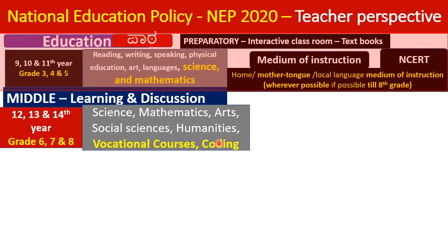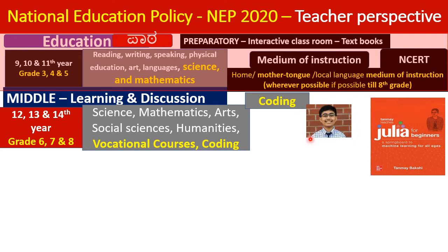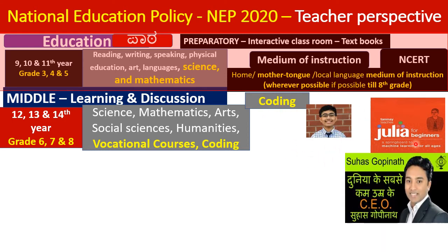Coding is particularly important given developments in artificial intelligence and machine learning. There are inspiring examples: one individual was teaching coding and machine learning to other children at age 14, while a boy named Suhas Gopinath from Bangalore became CEO of a software company — Global Inkz — at age 14, registering it in America, though even his parents were unaware.